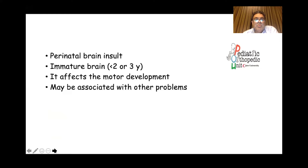Cerebral palsy is a perinatal brain insult. It occurs due to either injury or insult to the brain during pregnancy, during labor, or in the first two or three years after labor. The immature brain is affected where the motor area is partially damaged, causing disruption of normal motor development, and it may be associated with other problems. Literally, cerebral palsy is palsy of the limbs due to brain insult.